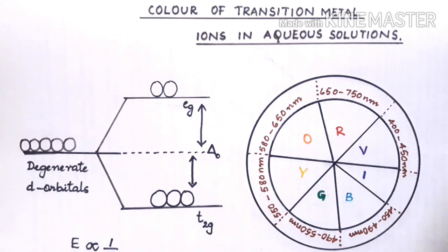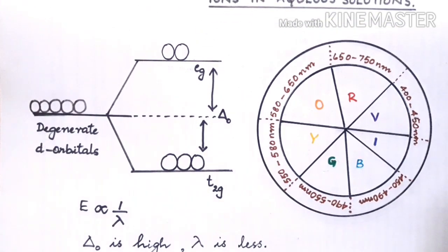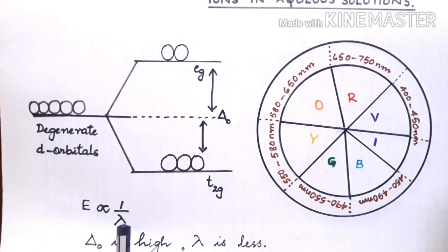The strength of the ligands decide upon the splitting energy. If a strong ligand is present, the splitting will be higher. When splitting is higher, the wavelength of the light used will be lesser.